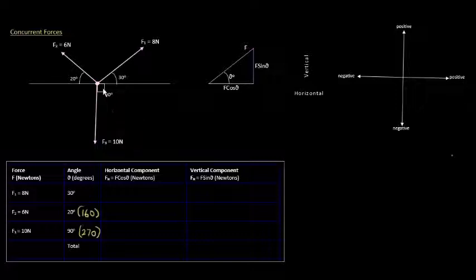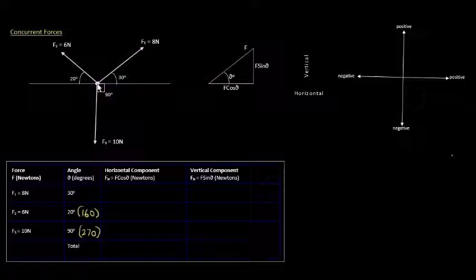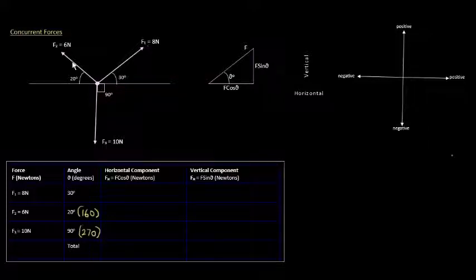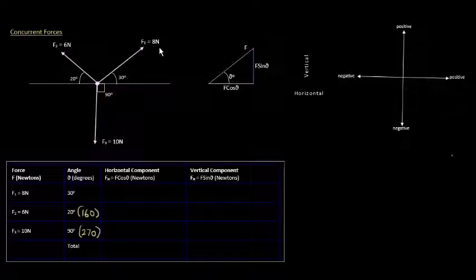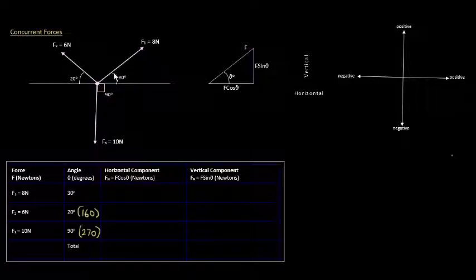This is a concurrent force system. As you can see, all the forces are acting at the same point — that's what makes it concurrent. We have F1, F2, and F3. Each force has a magnitude, which is an amount, and a direction, which is indicated by the angle.